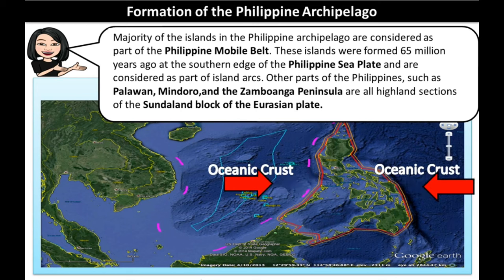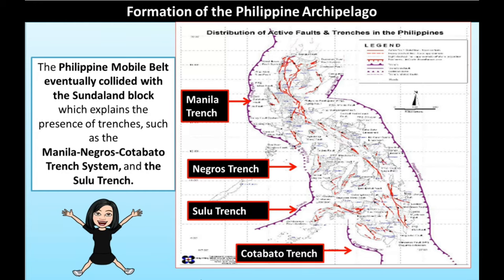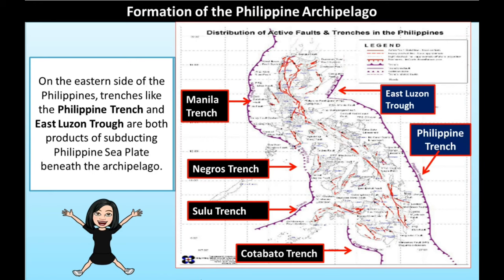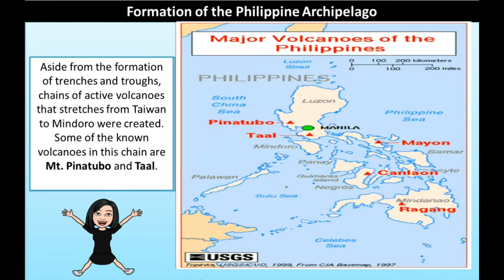Other parts of the Philippines, such as Palawan, Mindoro, and the Zamboanga Peninsula, are all highland sections of the Sundaland block of the Eurasian Plate. The Philippine mobile belt eventually collided with the Sundaland block, which explains the presence of trenches such as the Manila-Negros-Cotabato trench system and the Sulu Trench. On the eastern side of the Philippines, trenches like the Philippine Trench and East Luzon Trough are both products of the subducting Philippine Sea Plate beneath the archipelago. Aside from the formation of trenches and troughs, chains of active volcanoes stretching from Taiwan to Mindoro were created. Some of the known volcanoes in this chain are Mount Pinatubo and Taal.